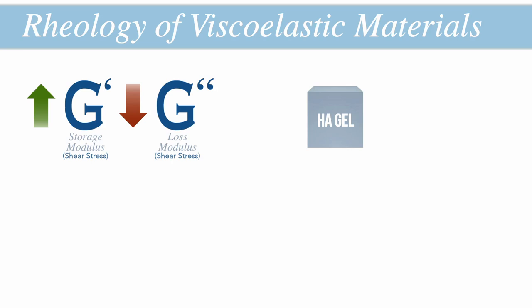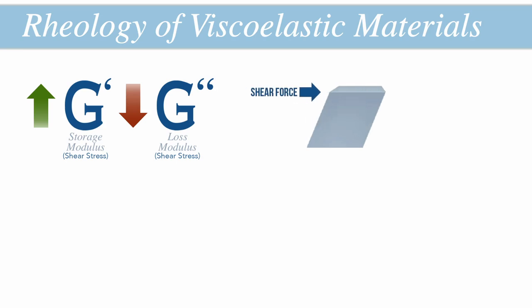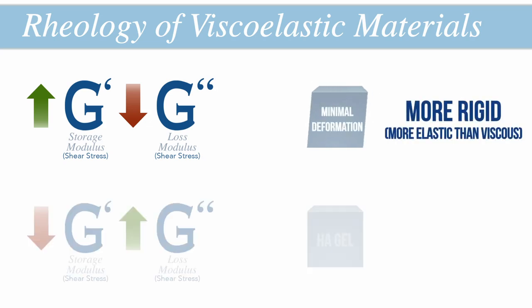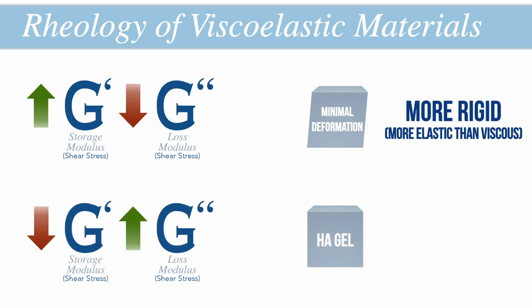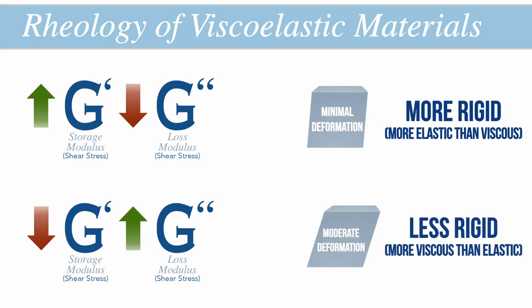The storage and loss moduli are extremely helpful in characterizing the behavior of hyaluronic acid gels. For example, a hyaluronic acid gel with a high shear storage modulus G prime and a low shear loss modulus G double-prime will behave more like a solid than a fluid, and when exposed to temporary shear stresses, the gel is likely to recover fully with minimal deformation. Conversely, if G prime is low and G double-prime is high, the gel is more likely to irreversibly deform easily but flow smoothly.